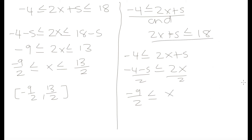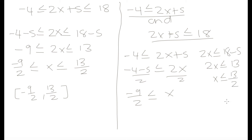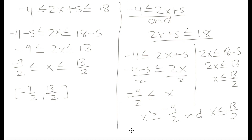For the second part: moving plus 5 to the right, we're left with 2x, which is less than or equal to 18 minus 5, giving us 2x is less than or equal to 13. Dividing both sides by 2, we get x is less than or equal to 13 over 2. So we have x is greater than or equal to negative 9 over 2, and x is less than or equal to 13 over 2. The interval boundaries are negative 9 over 2 with a square bracket, and 13 over 2 with a square bracket — and combining these intervals gives us the same answer as before. We can solve these types of inequalities either way and get the same answer.